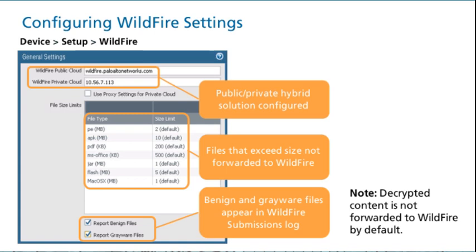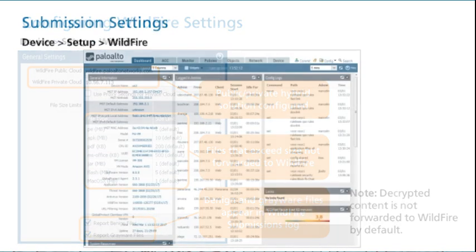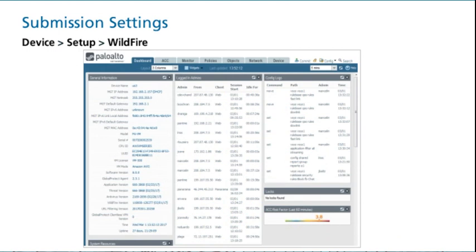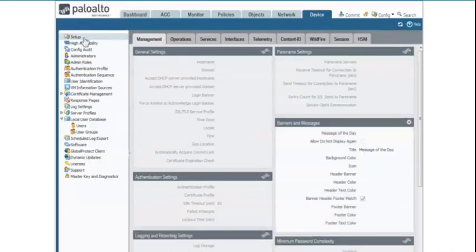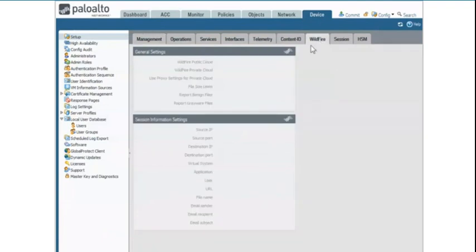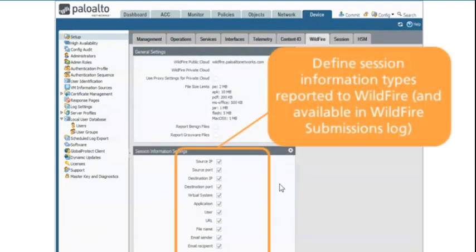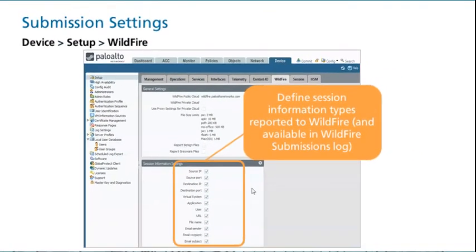If you have configured SSL or SSH decryption, the firewall will not forward any decrypted content to Wildfire for analysis until you enable the Allow Forwarding of Decrypted Content option at Device > Setup > Content ID > Content ID Settings. The Session Information Settings options specify which types of session information are sent to Wildfire. All options are selected by default. Because this information is submitted to Wildfire, Wildfire can include this information in the report that it returns to the firewall, which means that this information is available in the firewall's Wildfire submissions log or in the Wildfire portal.